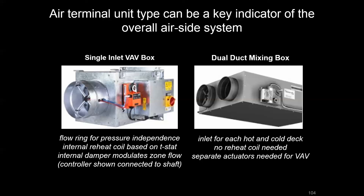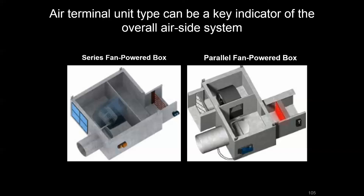The air terminal units or zone equipment will be different and that can be important. For the single inlet VAV box, because of the x-shaped flow ring and the pressure pickups coming off it, it's a pressure-independent box — meaning that flow can essentially be monitored so that regardless of upstream pressure, airflow can be maintained through this unit. There's a shaft through the controller with a built-in actuator that controls the damper, and there may be a reheat coil at the discharge. We may even have different combinations of fans in series or in parallel that pull air from the zone directly without sending it back to a central air handling unit for local reheat.